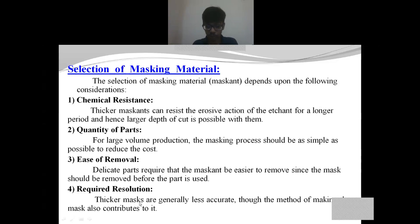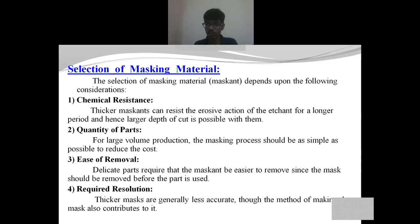The next consideration is the required resolution, which specifies the surface finish and texture of the finished product. Generally, thicker sections result in a rougher surface finish and thinner sections result in a smoother surface finish. Depending upon the application area of the finished product, we choose thicker or thinner sections accordingly. If a smoother surface finish is required, we must go for thinner sections, and vice versa.